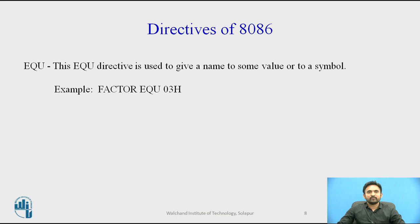The next directive is EQU. The EQU directive is used to give a name to some value or symbol. Each time the assembler finds the name in the program, it replaces the name with the value or symbol assigned to it. For example, 'FACTOR EQU 03H'. The advantage of EQU is that if it is used many times in a program and you want to change the value, you only need to change the EQU statement at the beginning and it changes throughout the rest.